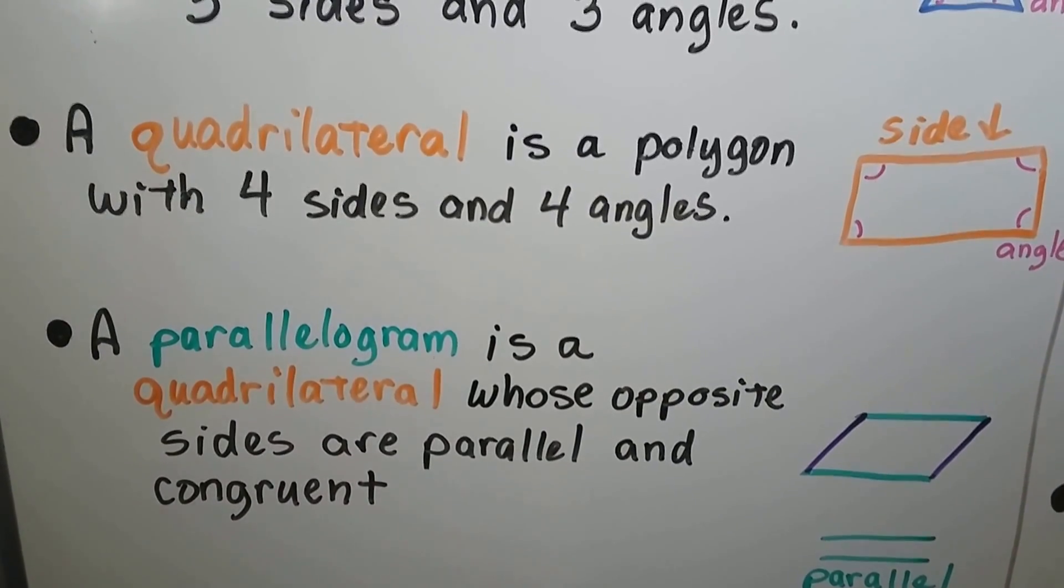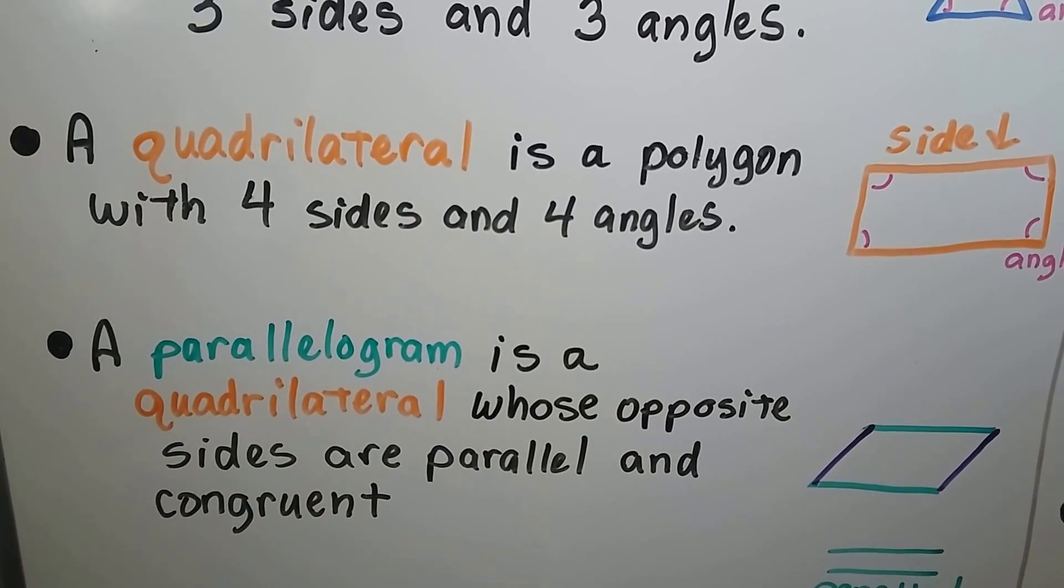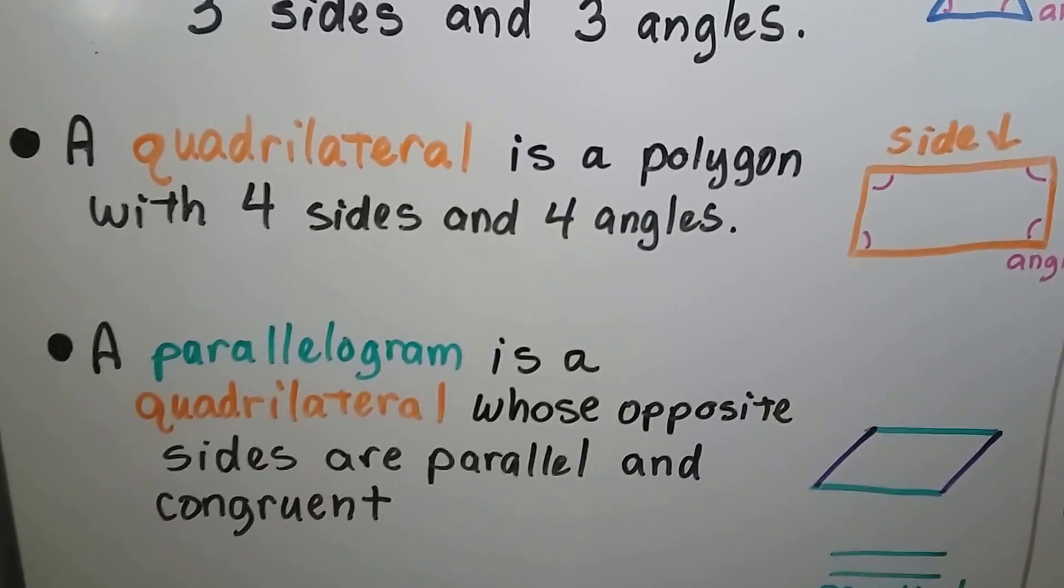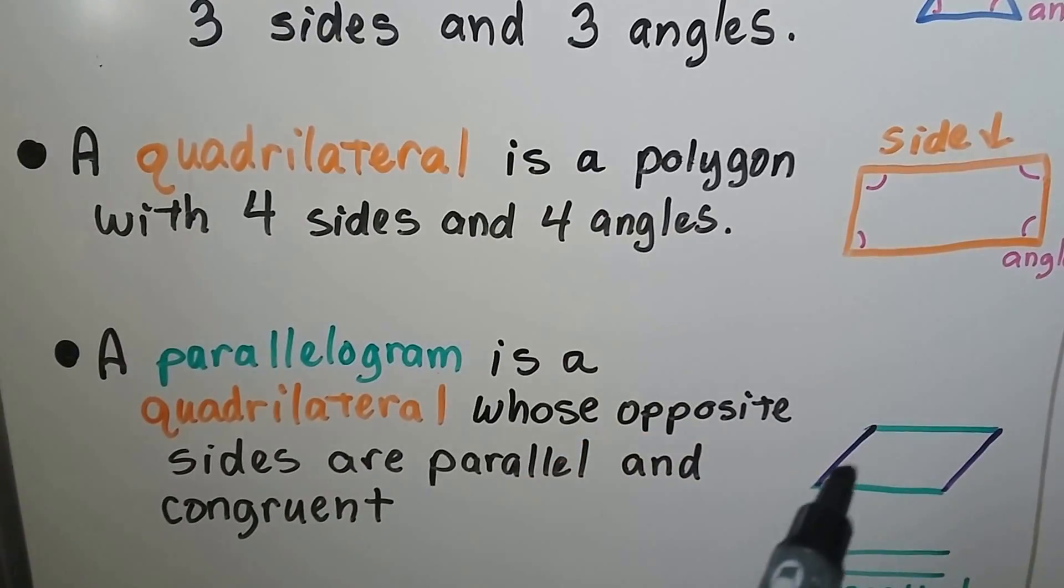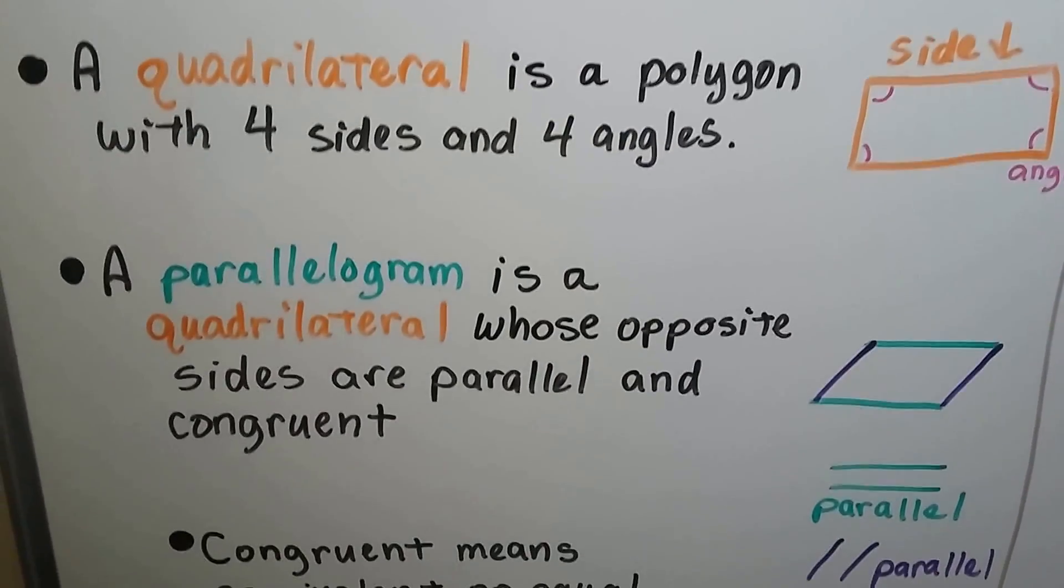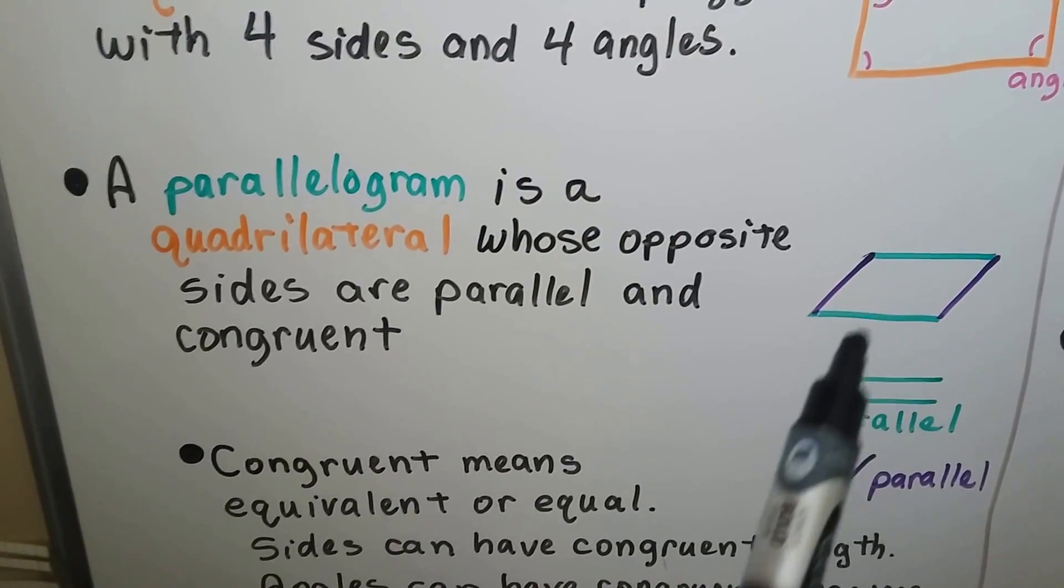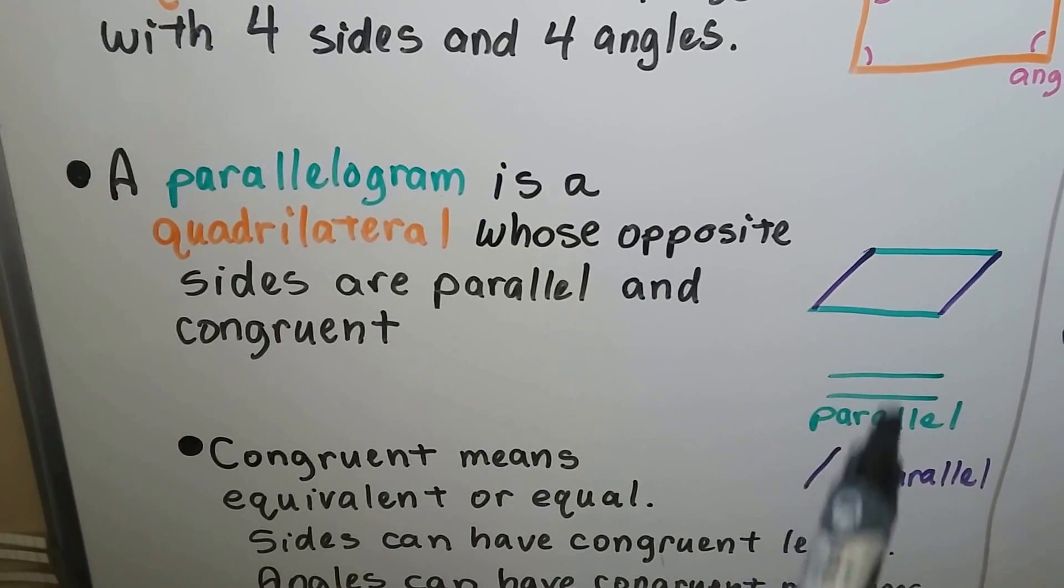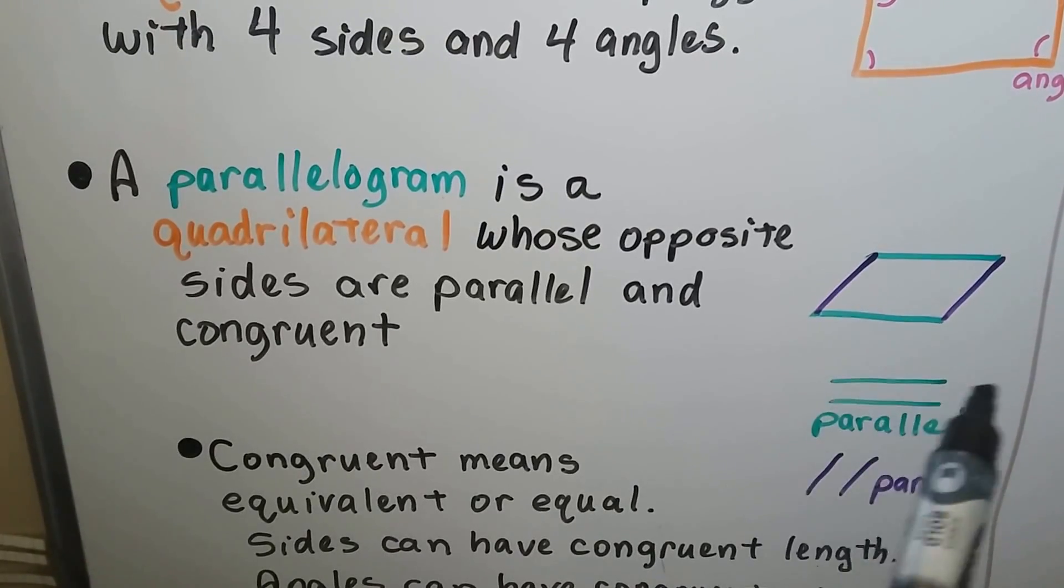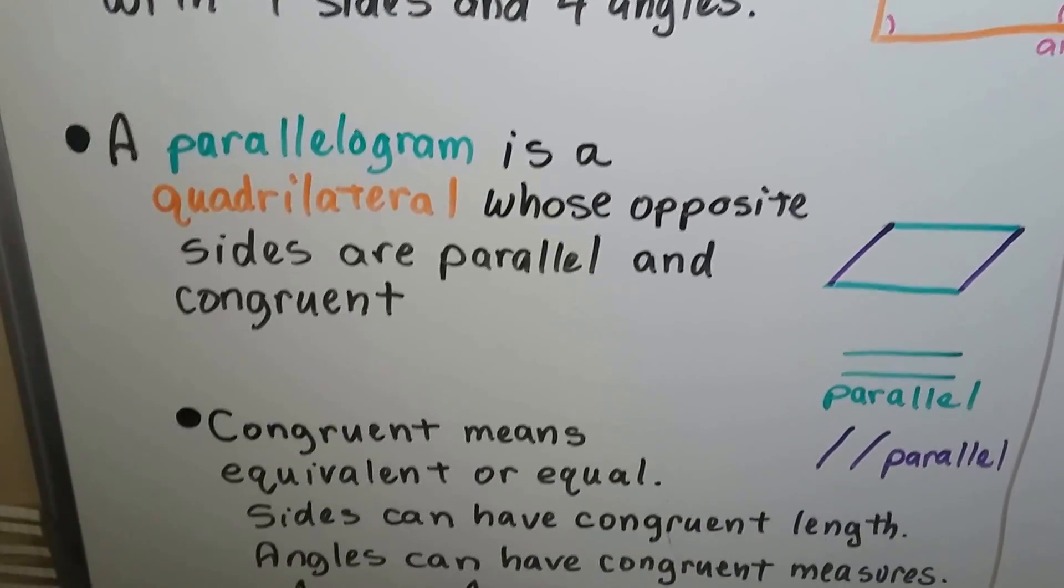A parallelogram is a quadrilateral whose opposite sides are parallel and congruent. See how it's slanting? So it's just like the quadrilateral except it's leaning. This green side is parallel to that green side, and that purple side is parallel to that purple side. Two parallel lines will never meet. They'll run side by side, but they'll never touch each other.